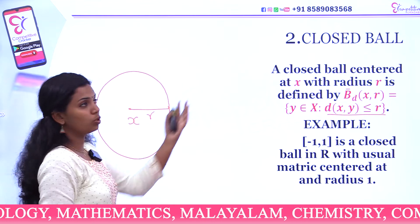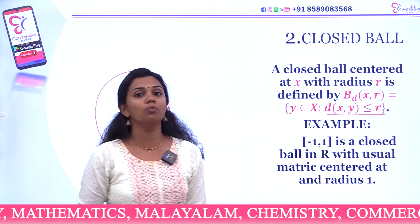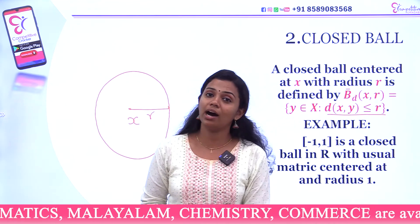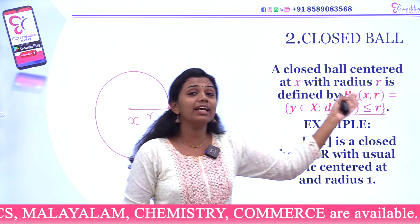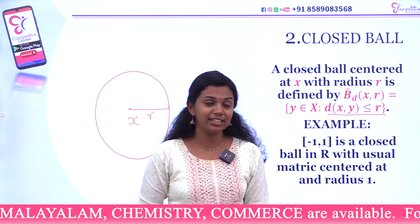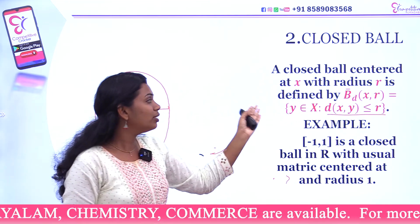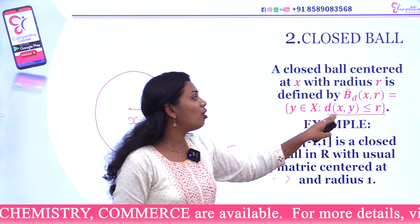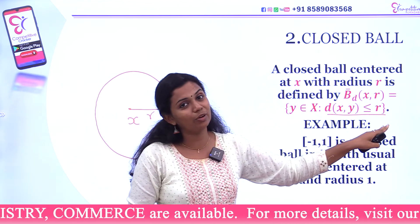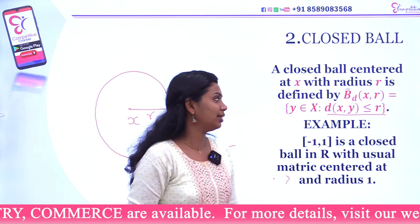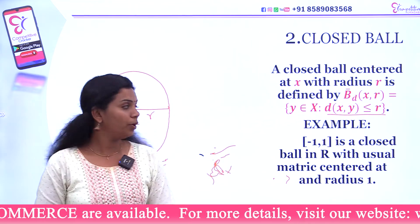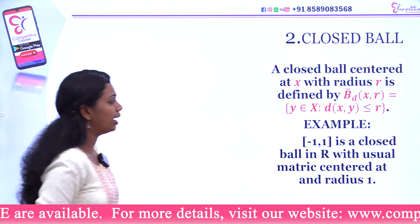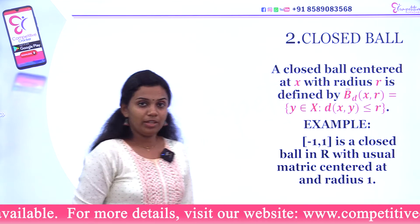So the closed ball B̄(x, r) is the ball centered at x with radius r, defined by the set of y belonging to X such that d(x, y) is less than or equal to r. This is the closed ball.